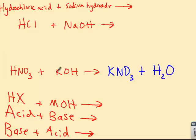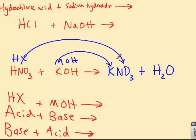So once again, this would be MOH. So the M, this is HX, so the X goes there. So you end up with MX, the metal and the anion, or the negative ion.